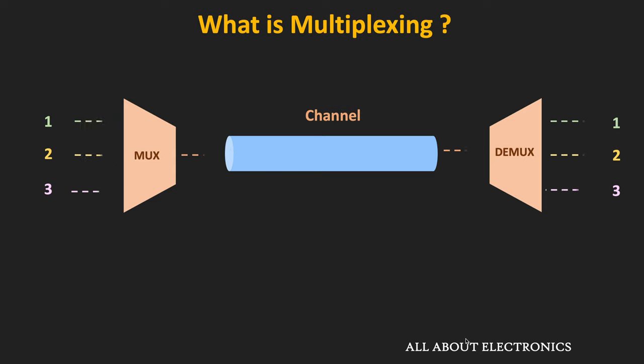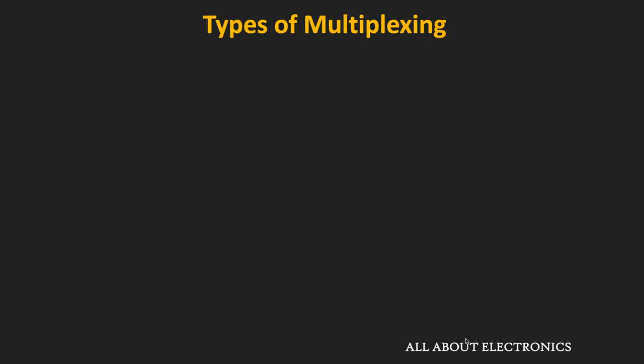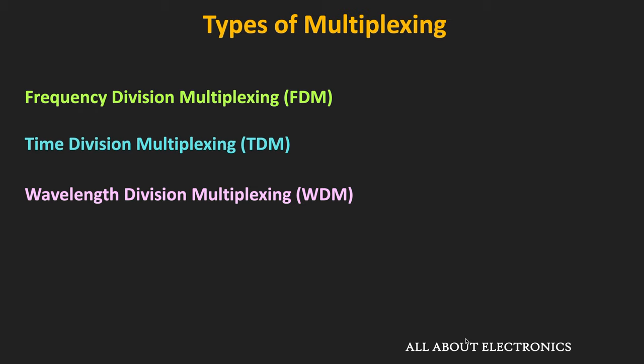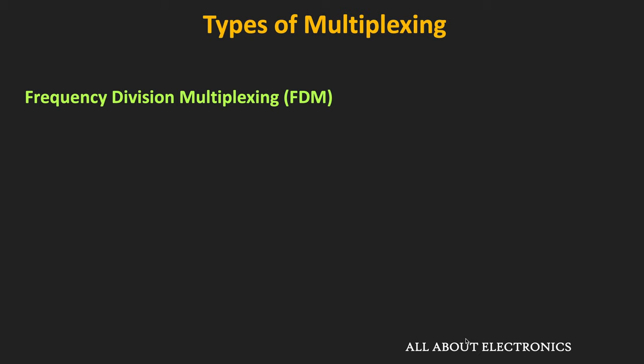With the help of multiplexing, the link or channel resources can be utilized more efficiently and the signals of multiple users can be transmitted simultaneously. There are three different types of multiplexing techniques: frequency division multiplexing, time division multiplexing, and wavelength division multiplexing. In this particular video, we will learn about frequency division multiplexing.